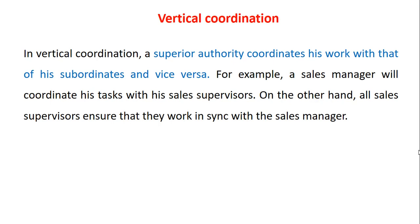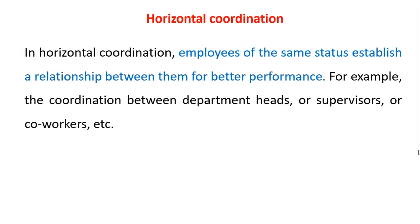On the other hand, all sales supervisors ensure that they work in sync with the sales manager. Next is horizontal coordination. In horizontal coordination, employees of the same status establish a relationship between them for better performance — for example, the coordination between department heads, supervisors, co-workers, etc.